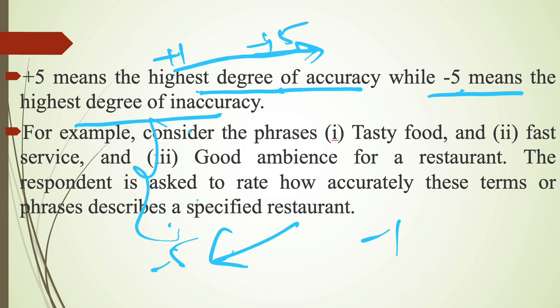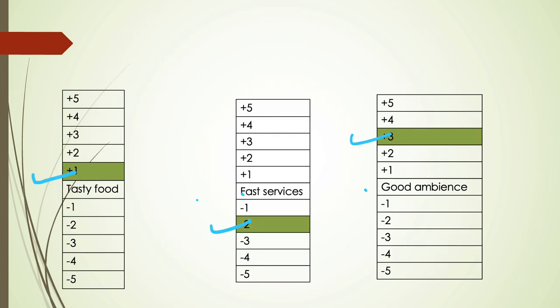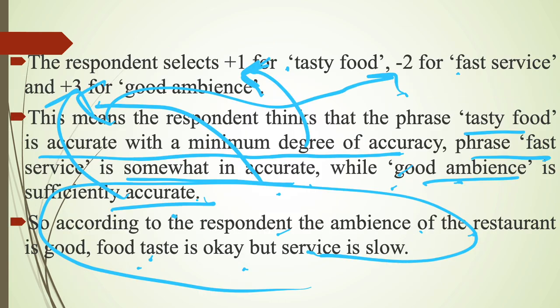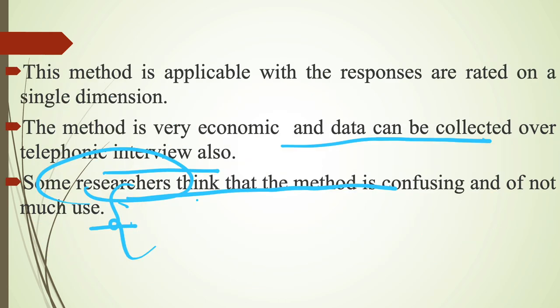Here we gave the example of a restaurant on the basis of tasty food, good ambience, and fast service. According to this example, the respondent indicates that ambience of the restaurant is good, food taste is okay, service is slow. It is a very economic method and data can be collected over telephonic interview also. So this is all about the Staple Scale.